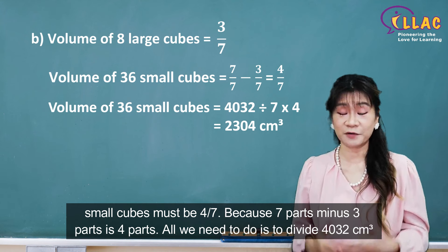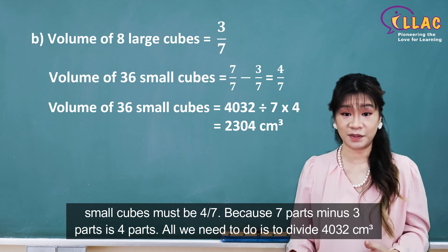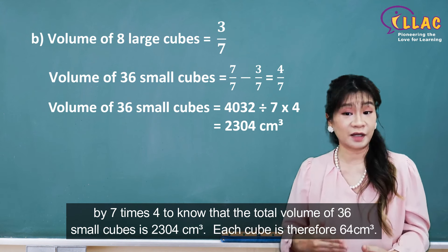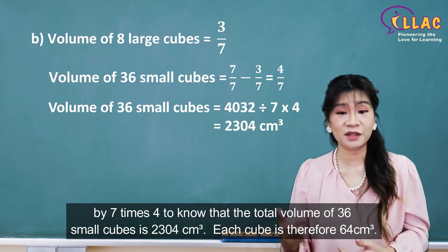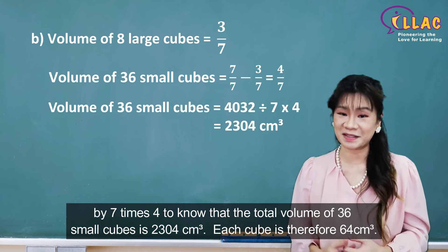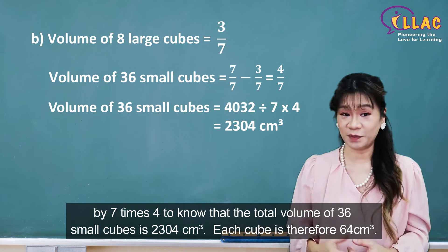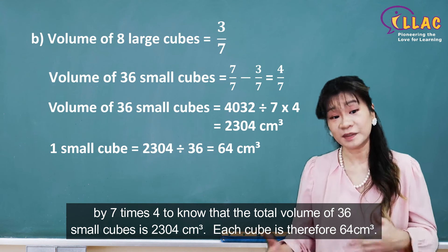All we need to do is divide 4032 cubic centimeters by 7 times 4 to know that the total volume of 36 small cubes is 2304 cubic centimeters. Each cube is therefore 64 cubic centimeters.